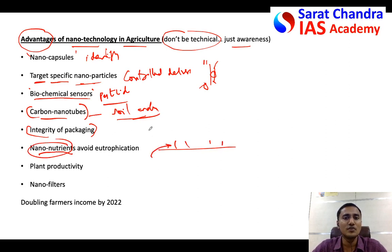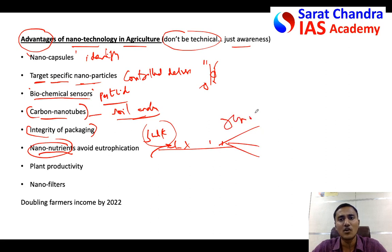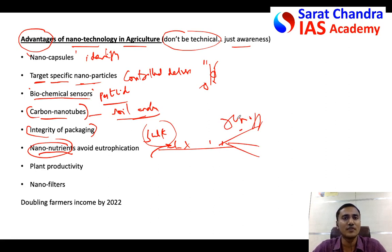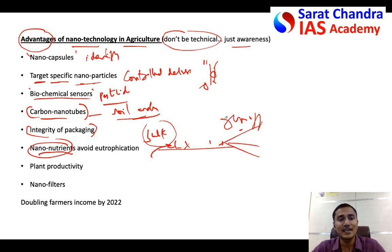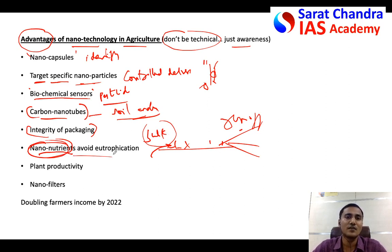Nanonutrients address a key problem: in agriculture we generally use bulk nutrients, much of which is wasted — some runs off with water into surrounding water bodies or groundwater, leading to eutrophication, meaning increased release of nutrients into water bodies. This can be controlled by using nanonutrients instead of bulk nutrients, thereby reducing environmental and water pollution.